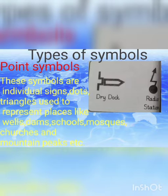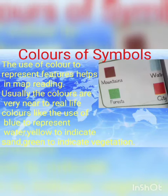یعنی کہ these symbols tell us about wells — یعنی کہاں پر کون سا ہے — dams, different dams کے بارے میں، schools کے بارے میں، کوئی بھی مسجد، churches اور different mountain peaks کے بارے میں — یہ symbols ہمیں بتاتے ہیں۔